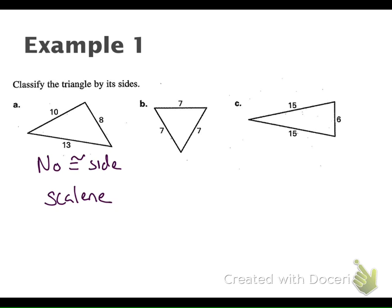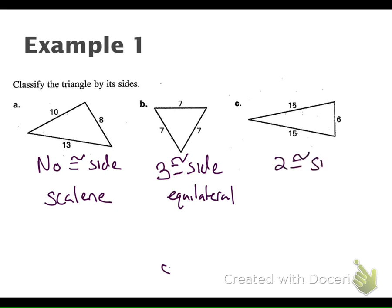Our next one up, how many congruent sides do we have? Three congruent sides — and that is equilateral. And then our last one, how many congruent sides do we have? Two congruent sides — and what do we call that one? Isosceles.